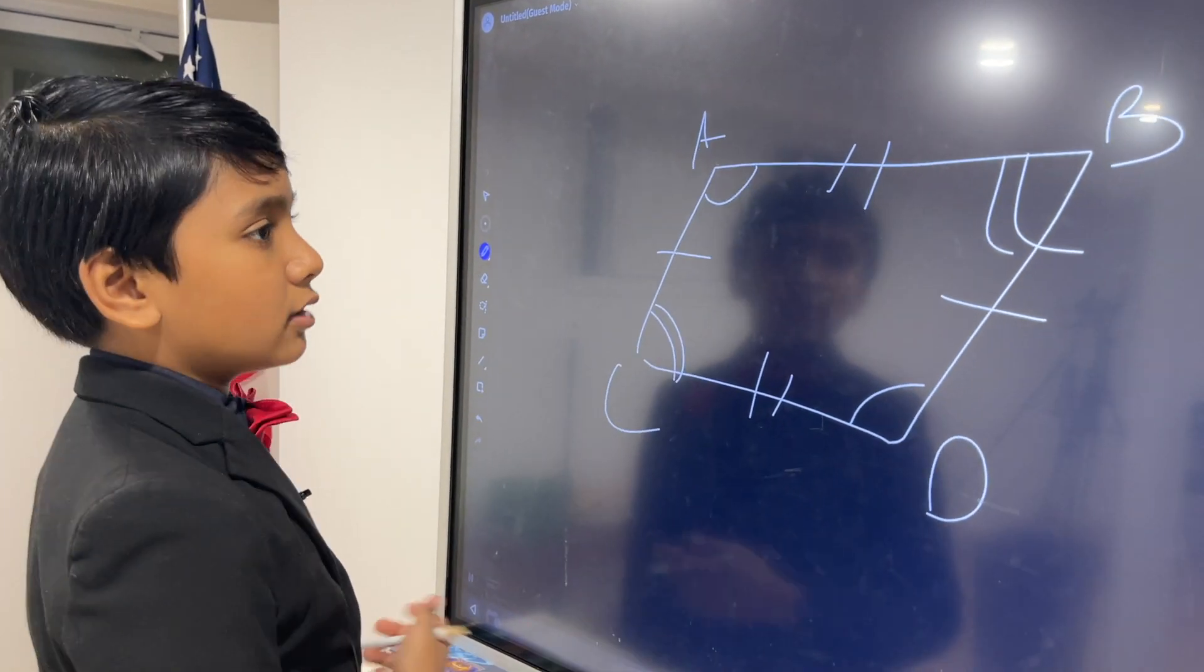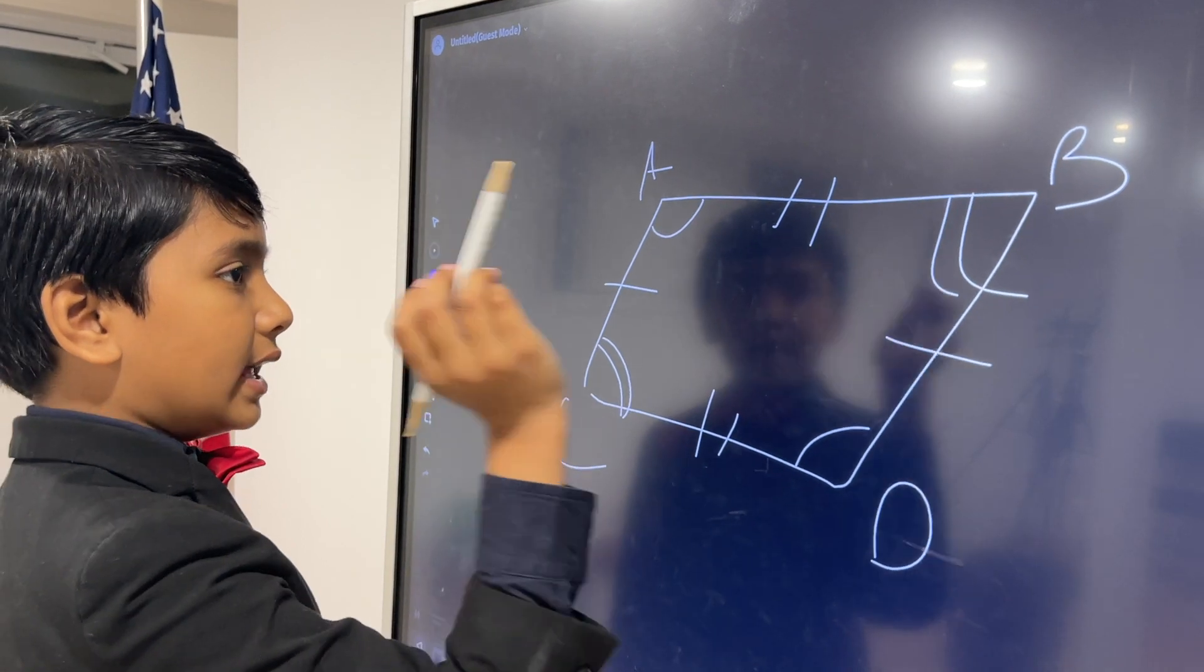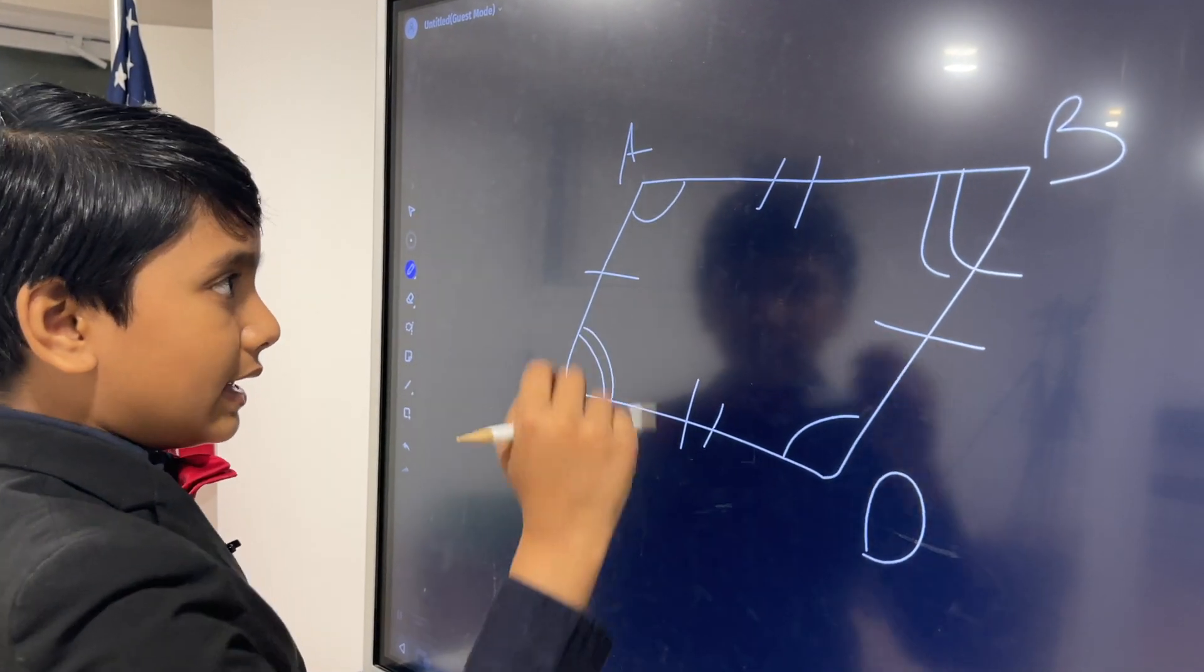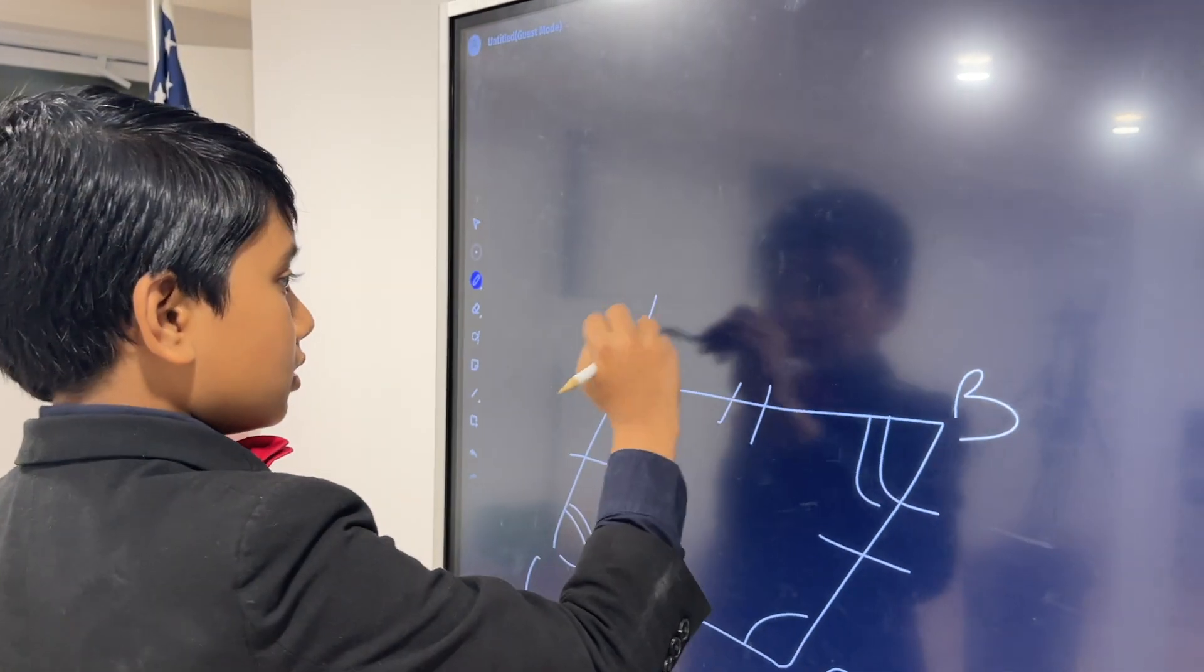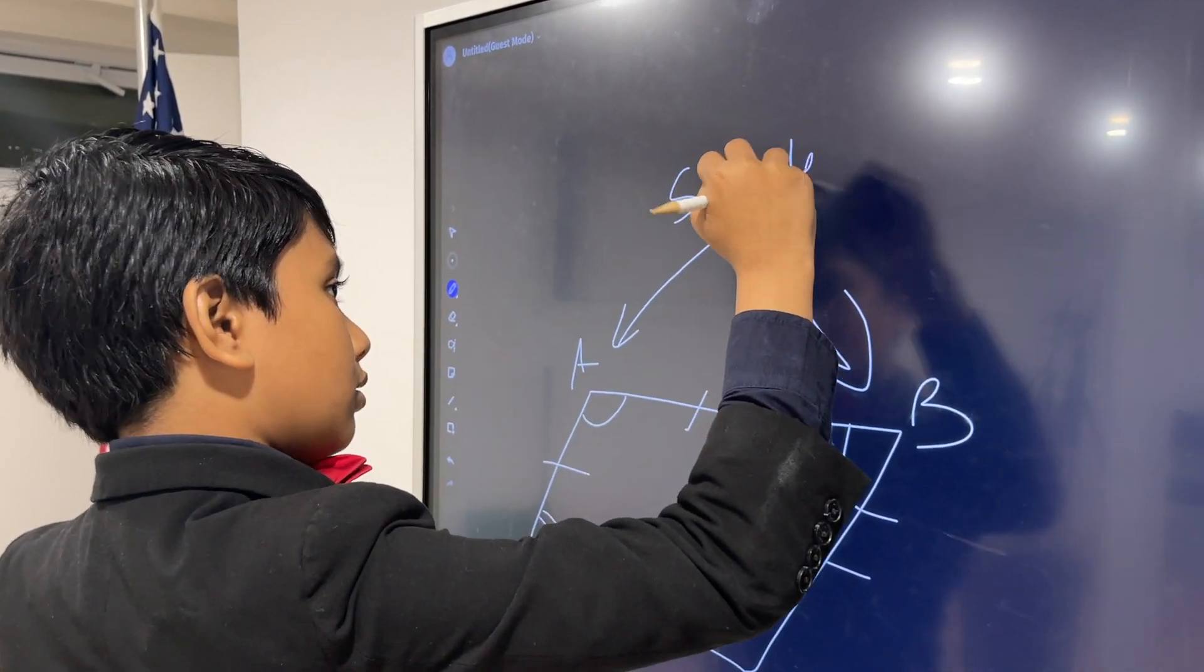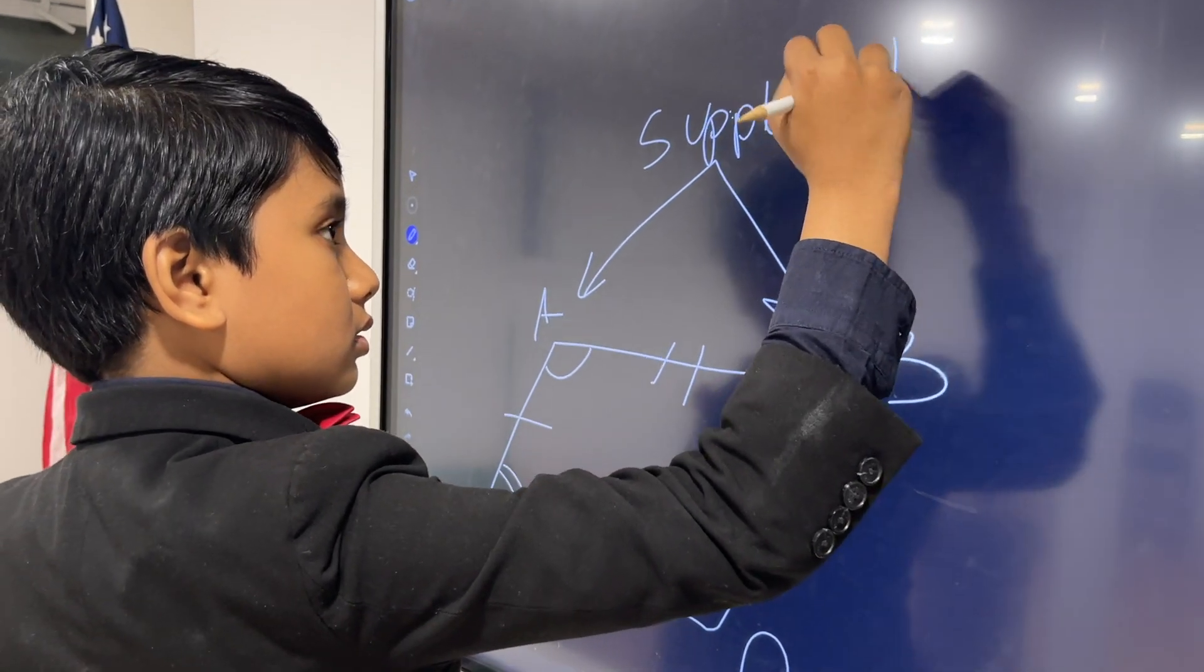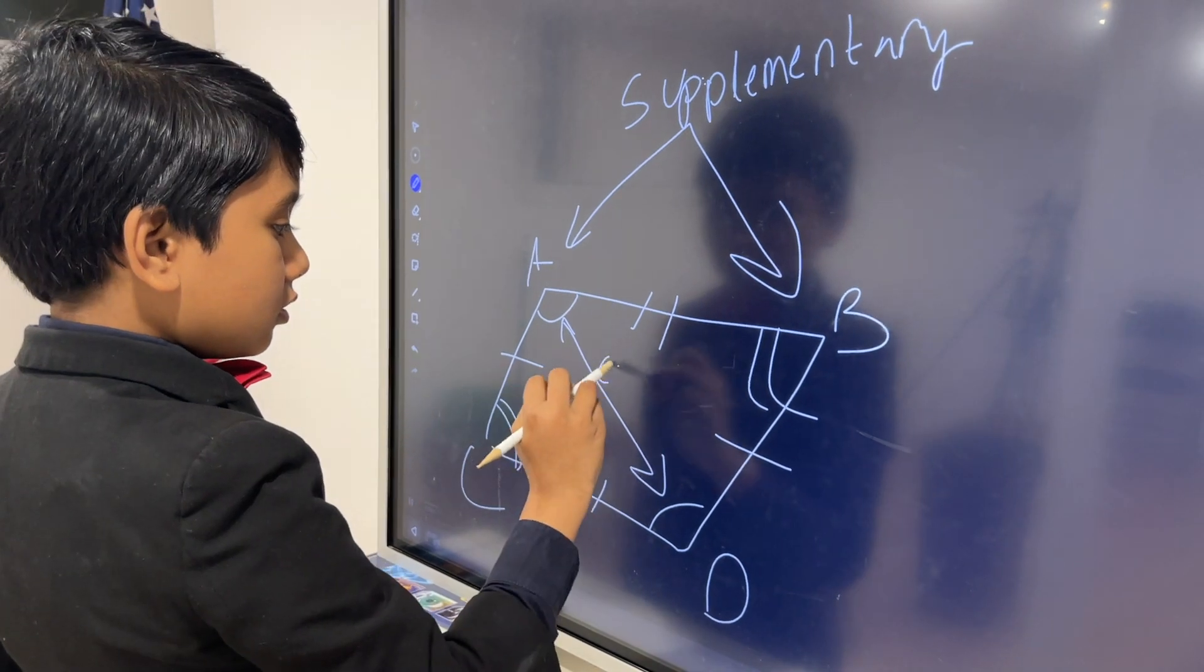Now, adjacent angles like A and C, or A and B, or B and D, they are supplementary.